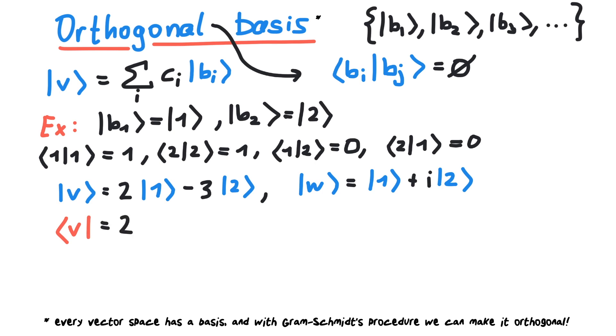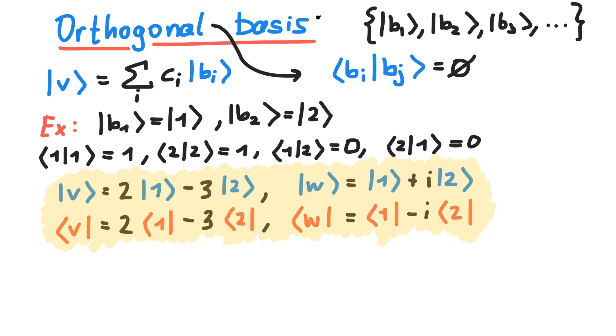To calculate an inner product, we also need the bra versions, which are given by Hermitian conjugation. This means changing the sign of every i that appears, as well as turning kets into bras and vice versa.